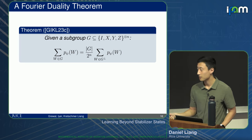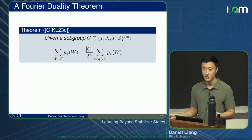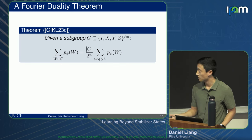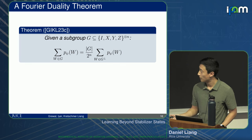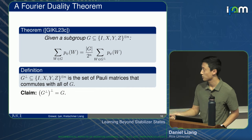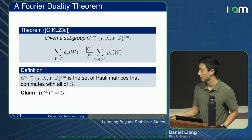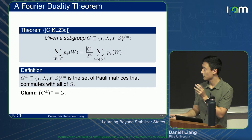The really important part of our work is this duality theorem: given a subgroup G of the Pauli matrices, the sum of p_ψ over G is proportional to the sum over G⊥, which is the commutant of G — the set of Pauli matrices that commute with all of G. The commutant of the commutant equals itself, so you can think of moving between a group and its dual. The key corollary is that the support of p_ψ lies in the commutant of stab(ψ).